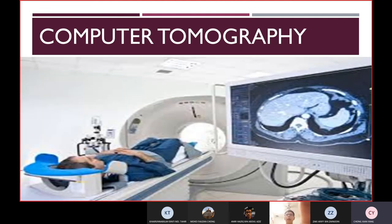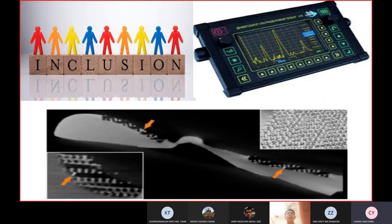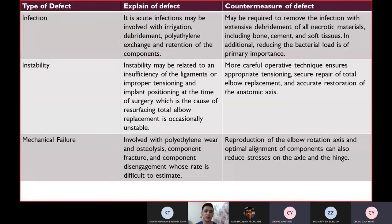For the quality control part, we use the computer tomography method. There are three parts in here, which are shape determination inspection, defectoscopy, and dimensional analysis. For the defectoscopy, there will be inclusions in which there are many air bubbles in between. They have three types of defects, which are first infection, second instability, and mechanical failure.